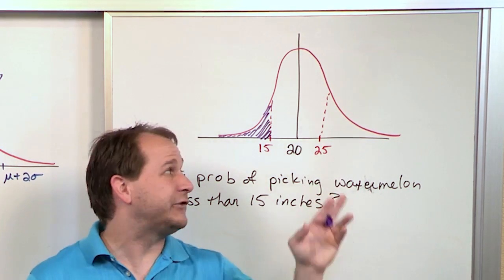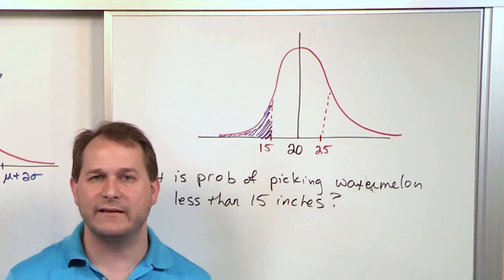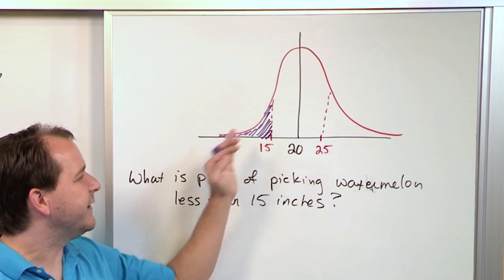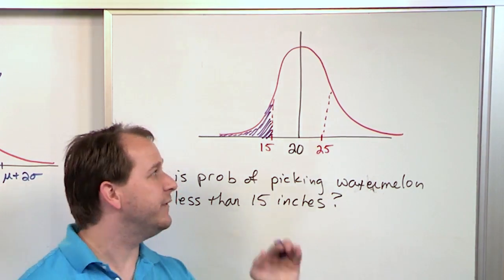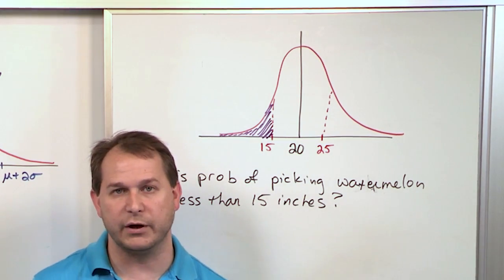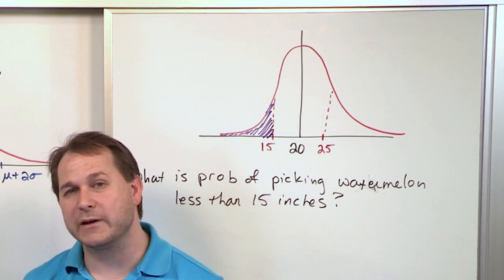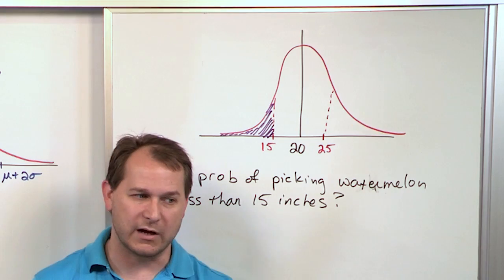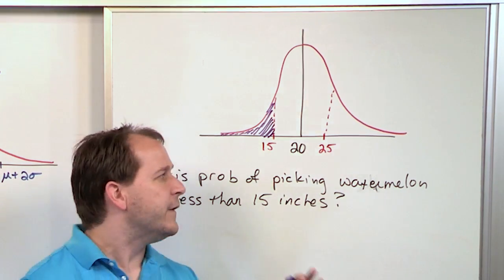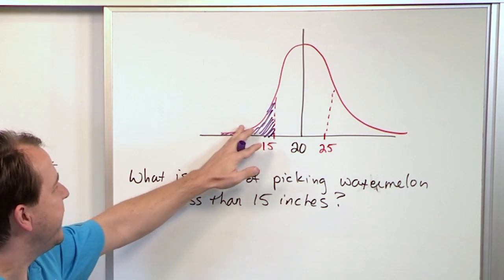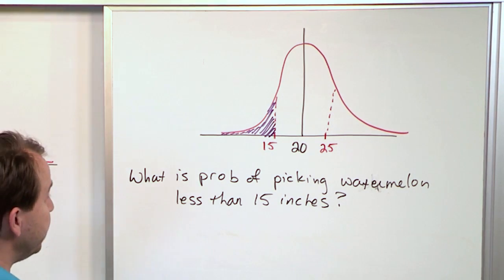How do you actually find this area to get a number — a probability like 0.4 or 0.35? We'll use tables in the back of your probability or statistics book to calculate the area under the curve. You could use the actual formula for the probability distribution and calculus to do it manually, but everything's tabulated. For this lesson, I just want you to understand that this shaded region is the answer. We'll get to actual problems later.